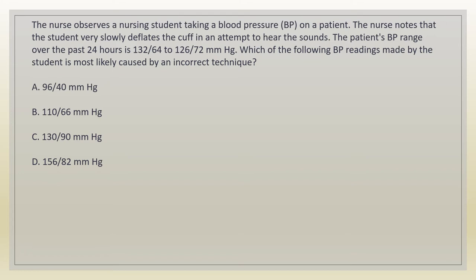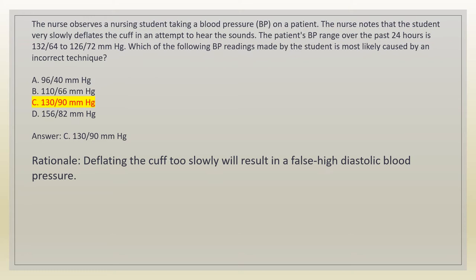The nurse observes a nursing student taking a blood pressure on a patient. The nurse notes that the student very slowly deflates the cuff in an attempt to hear the sounds. The patient's BP range over the past 24 hours is 132/64 to 126/70 mmHg. Which of the following BP readings made by the student is most likely caused by incorrect technique? A. 96/40 mmHg. B. 110/66 mmHg. C. 130/90 mmHg. D. 156/80 mmHg. Answer: C. 130/90 mmHg.